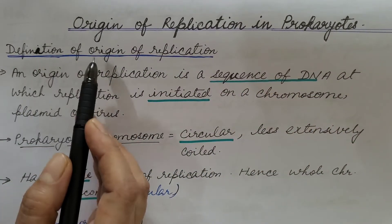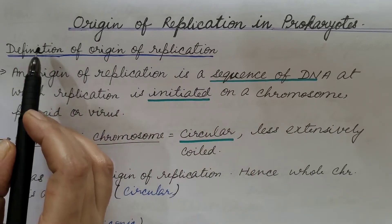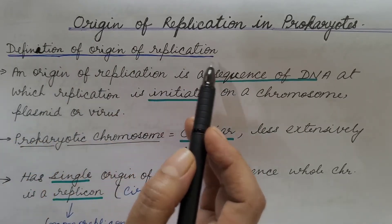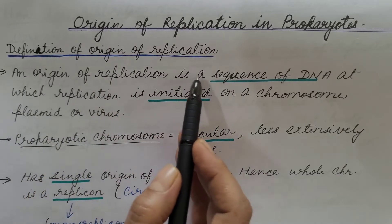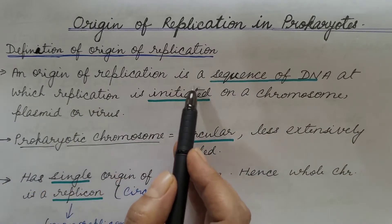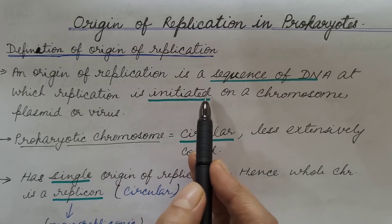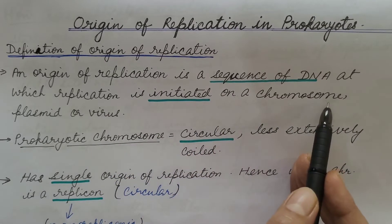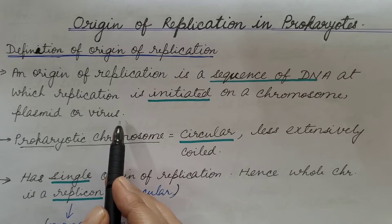So first of all, what is origin of replication or definition of origin of replication? An origin of replication is a sequence of DNA at which replication is initiated or replication starts on a chromosome, plasmid or virus.